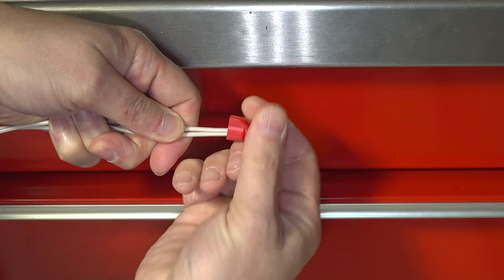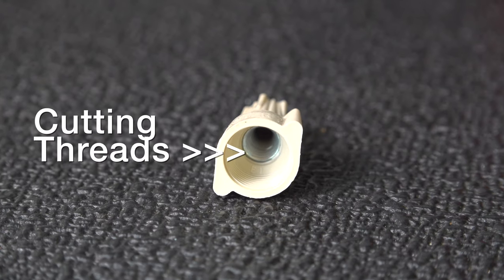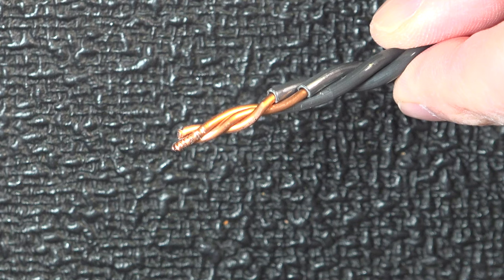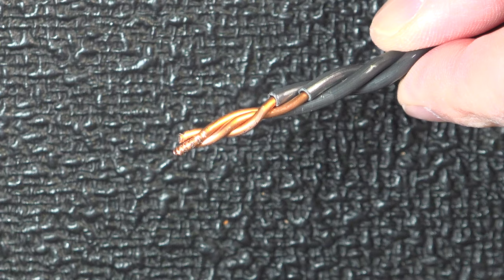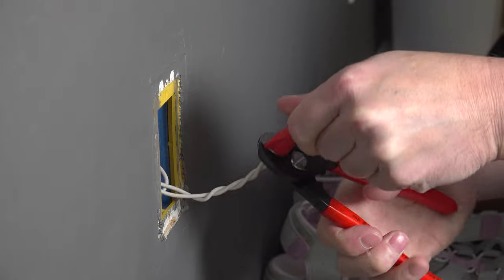The biggest problem with wire nuts is they're not reusable. Once you put them on they bite into the wire, and that's just part of the design that keeps them secure. But if you ever need to make any changes, those bite marks can interfere with another connector and can actually cause overheating.